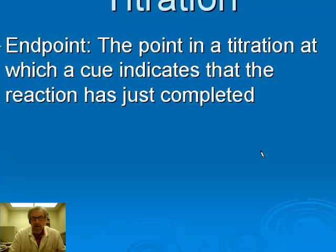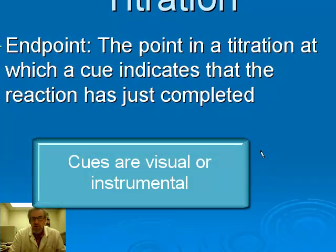In a titration, the goal is to reach the endpoint accurately. The endpoint is the point in a titration where some cue, which could come from an instrument like a pH meter if you're doing an acid-base titration, or it could be a color change, which is also quite common.